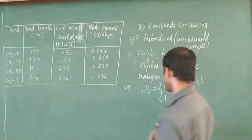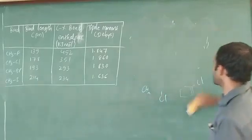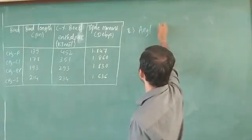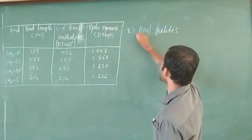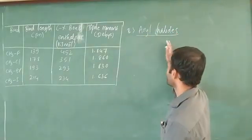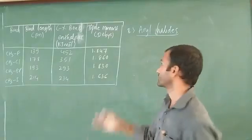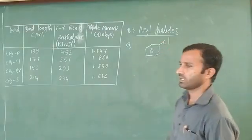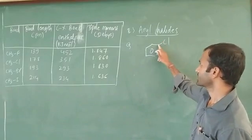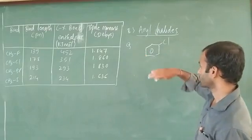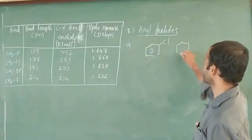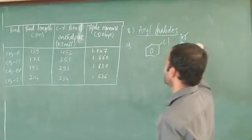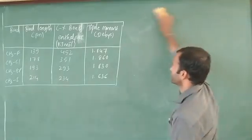The next type is aryl halides. Aryl means benzene ring — the halogen atom is directly attached to the aromatic ring, and that is called an aryl halide. For example, chlorobenzene: the chlorine is attached to an sp2 hybridized carbon of the ring. You can also take bromobenzene, iodobenzene — all are examples of aryl halides. This completes the saturated and unsaturated halogen derivative classification.